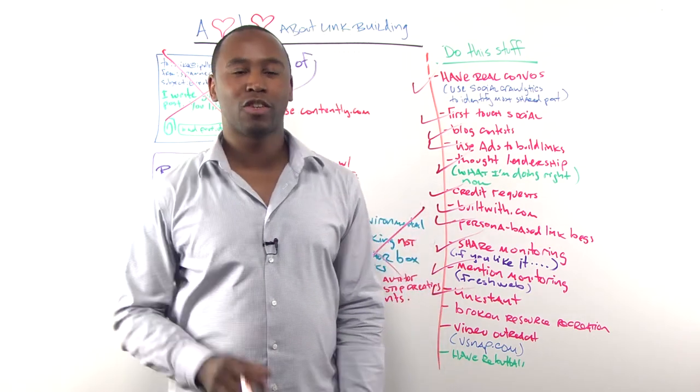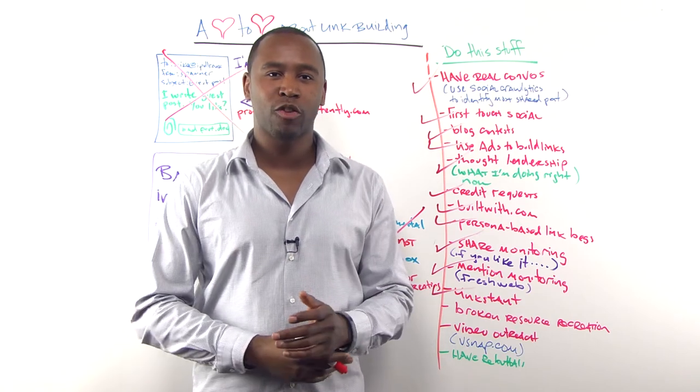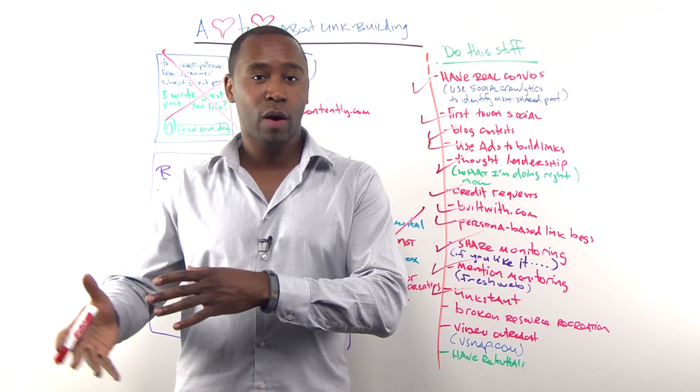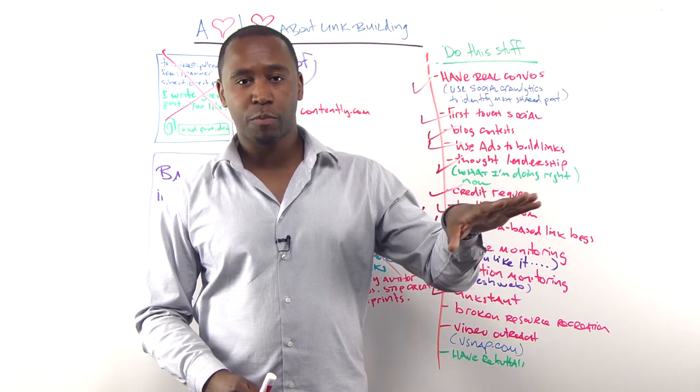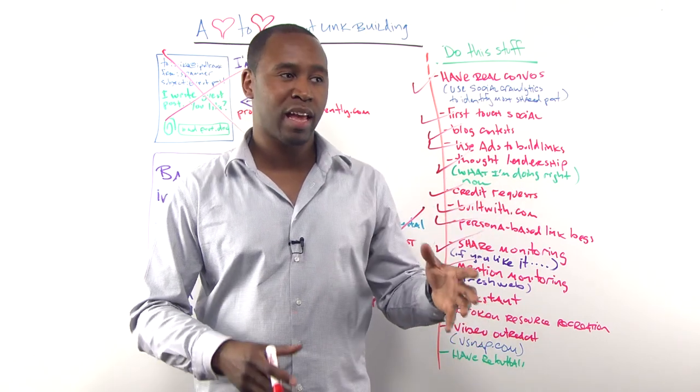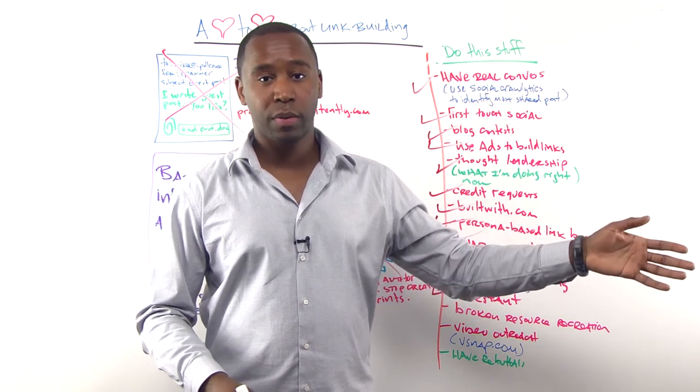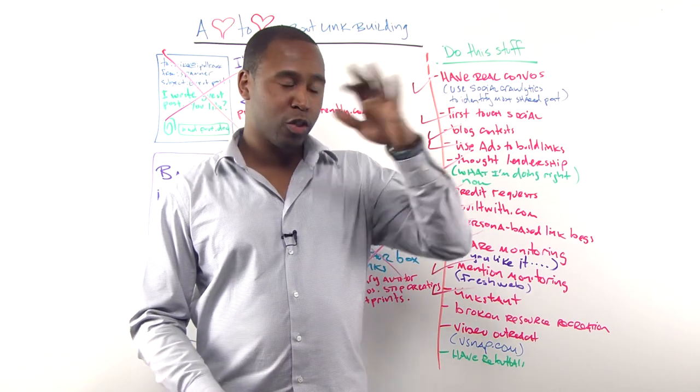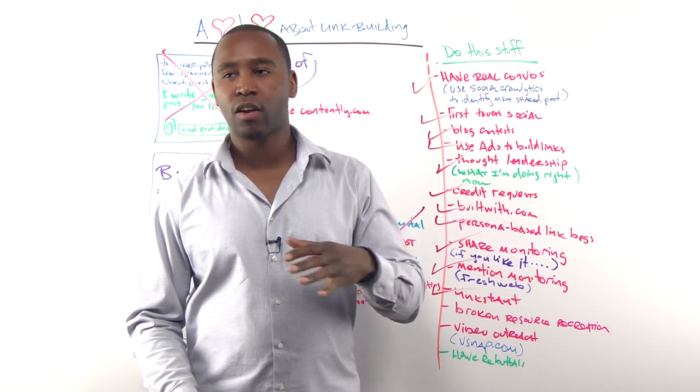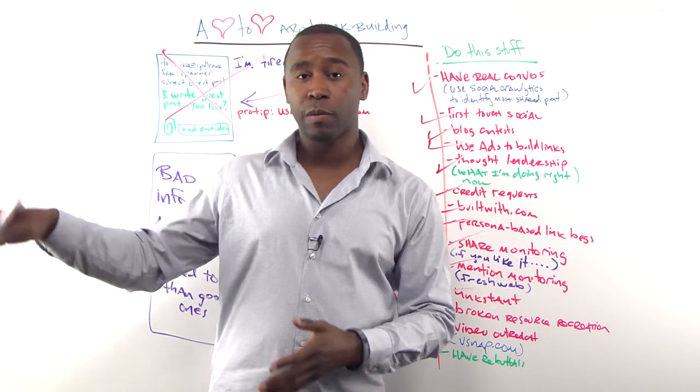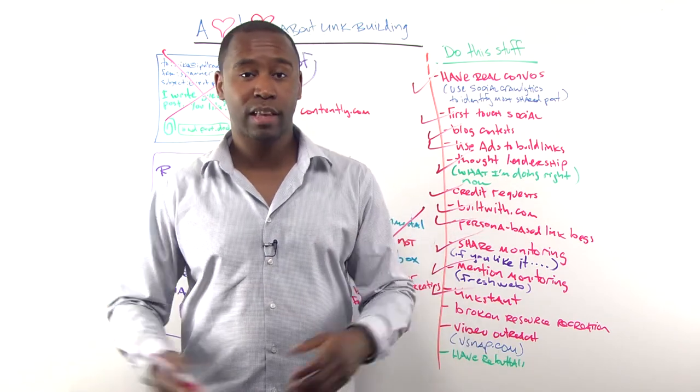Broken resource recreation. Everybody talks about broken link building. I don't know how much they talk about recreating something that used to exist on the web that's no longer there. We actually built the brokenlinkindex.com just for that purpose. So you can search by keywords to identify things that no longer exist on the web and then go to the Wayback Machine to see what it used to be and then create a better version of it. And then what you do is you look at that link resource in Open Site Explorer to see how many links it has. Reach out to all those people that are still linking to it and say, hey, this is gone, but I have a new version that's even better. Why don't you link to that? Incredibly effective.